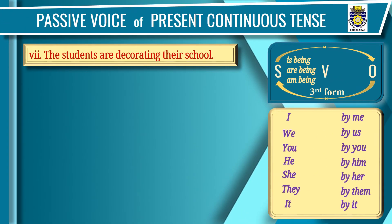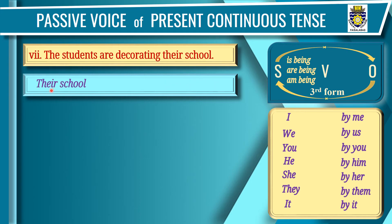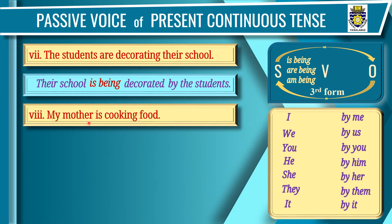Sentence 7: 'The students are decorating their school.' Subject: 'the students'; verb: 'are decorating'; object: 'their school'. Step one: 'their school' at the beginning. Step two: 'by the students'. Step three: third form of 'decorating' is 'decorated'. Step four: 'their school' is singular — write 'is being' — 'Their school is being decorated by the students'.